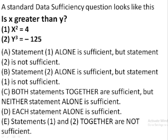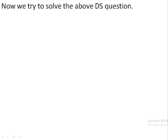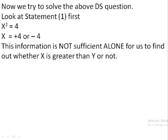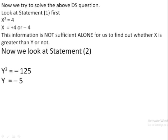So let's solve this problem. The first statement says X squared equals 4. If X squared equals 4, X can be plus 2 or minus 2. So this information alone is not sufficient for us to say whether X is greater than Y or not — we know the value of X, but we don't know the value of Y.